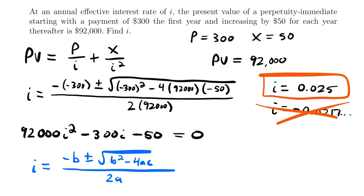So the interest rate is i equals 0.025 for this perpetuity immediate with an arithmetic progression. That is the solution to this problem and the last example for this video. If you have any questions, feel free to leave them in the comments below. See you next time.